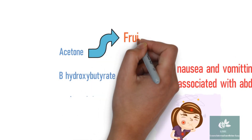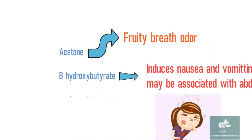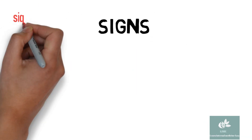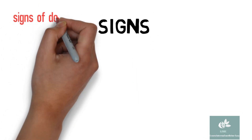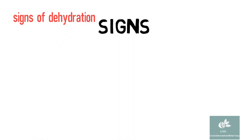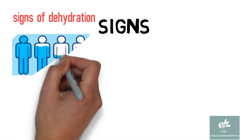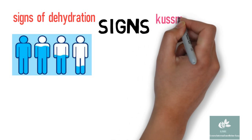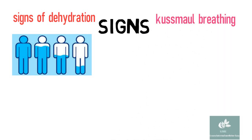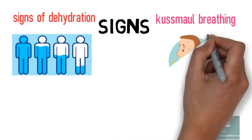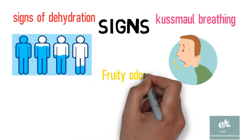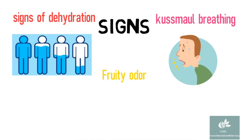To summarize, signs in DKA include signs of dehydration — weak and rapid pulse, dry tongue and dry mucosa, and hypotension — as well as Kussmaul respiration.